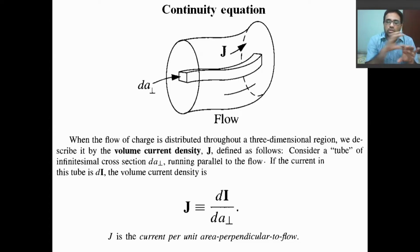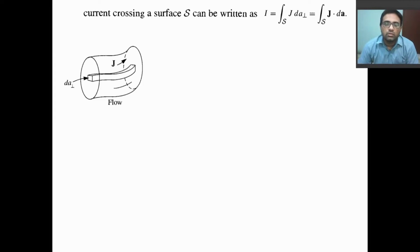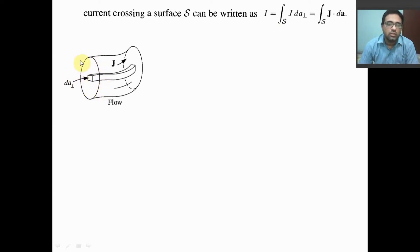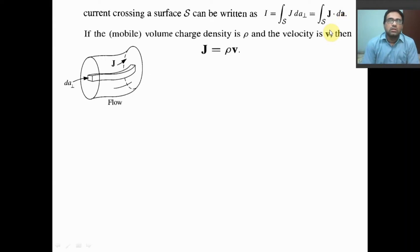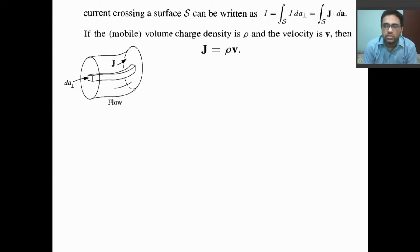Through a conductor, charge is continuously flowing. We can write the total current flowing through that conductor as an integral. If the total cross-sectional area is S, we integrate over S, and dA⊥ written in vector form becomes J·dA. The volume current density can also be written as ρ times V, where ρ is the volume charge density and V is the velocity of charge flow.